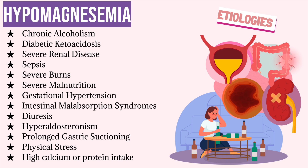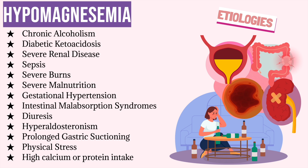Some instructors may teach you that hypomagnesemia could be caused by alcohol withdrawal — this is also true. When an individual withdraws from alcohol, free fatty acids increase, which may result in a decrease in plasma magnesium. Other etiologies of hypomagnesemia may include severe renal disease, sepsis, severe burns, severe malnutrition, pregnancy-induced hypertension, intestinal malabsorption syndrome, drug-induced diuresis, hyperaldosteronism, prolonged nasal gastric suctioning, physical stress, as well as a high calcium or protein intake.